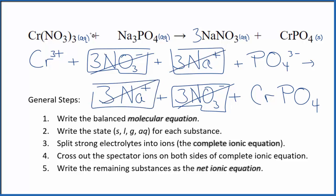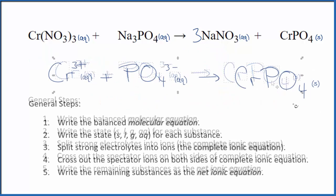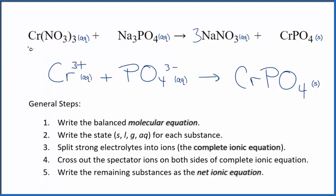what's left, that's the net ionic equation for Cr(NO3)3 plus Na3PO4. I'll clean it up, write the states, we'll have our net ionic equation. So this is the balanced net ionic equation for chromium(III) nitrate plus sodium phosphate.